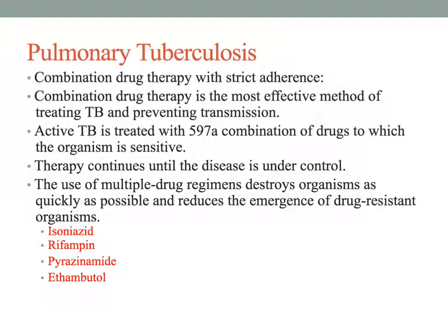Once someone is identified as positive for TB, they will undergo combination drug therapy for tuberculosis, which is the most effective method of treating TB and preventing transmission. This therapy is often long-term, lasting 6 to 12 months, and is an expensive combination regimen with side effects.